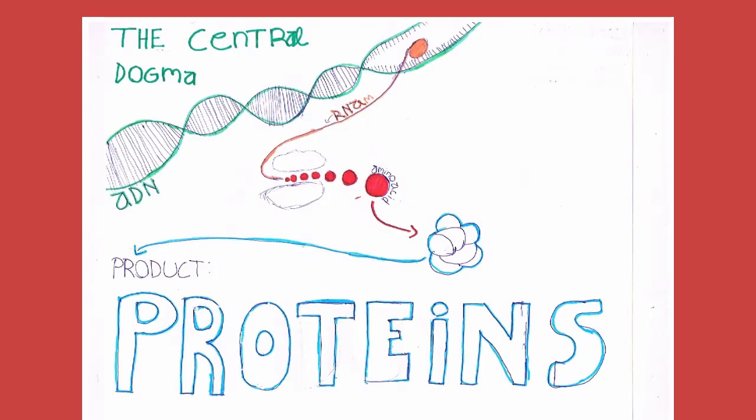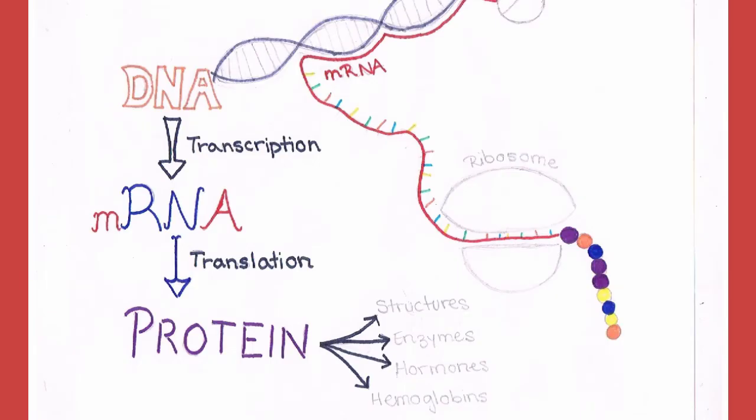The central dogma of biology states that the information contained in the DNA is carried by messenger RNA molecules to proteins. This process is divided into two steps.